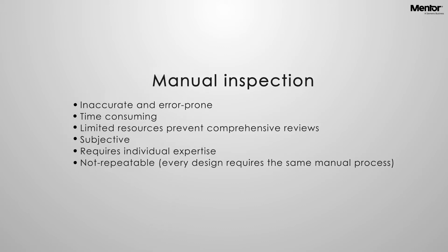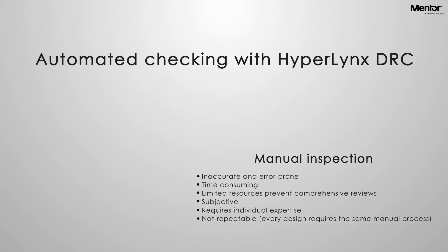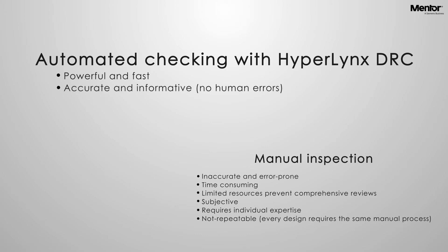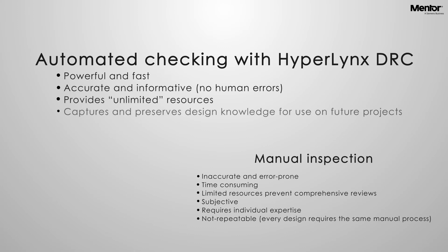On the other hand, automated design rule checking is robust and rapid, taking just minutes or even seconds. It is accurate and informative, and eliminates human inconsistency issues. Best of all, DRCs can be saved for use on future projects.